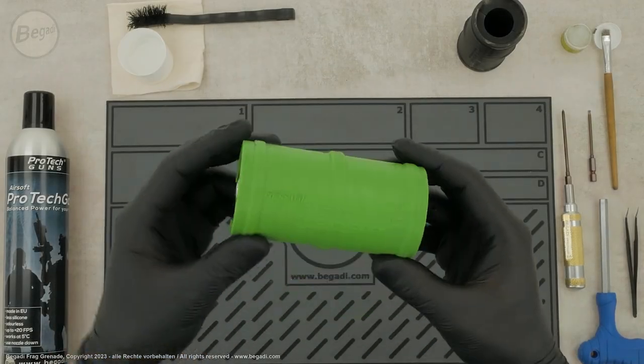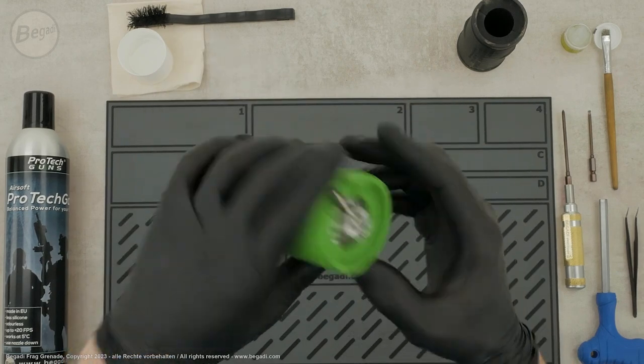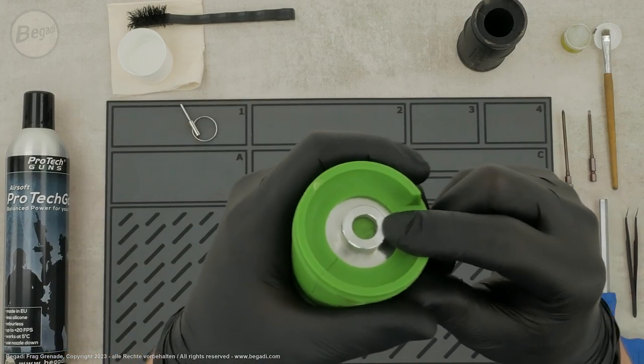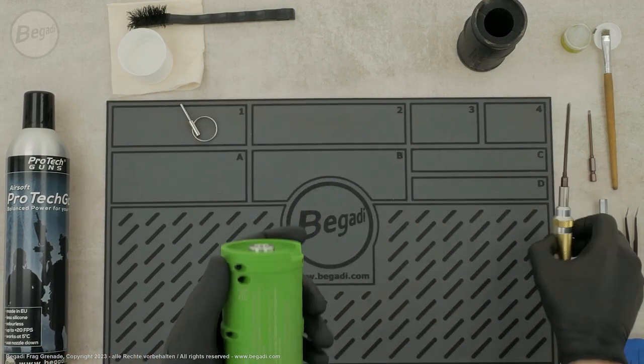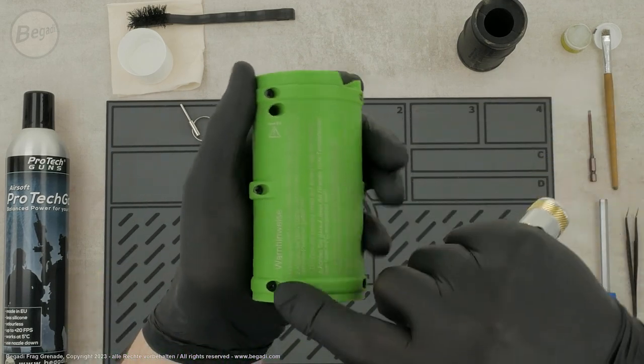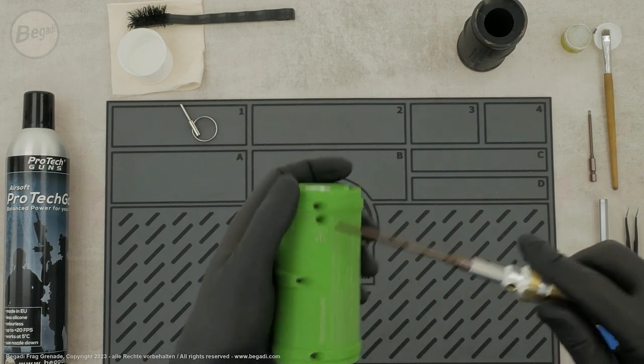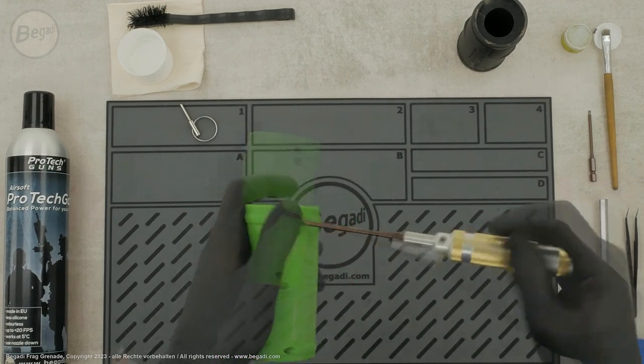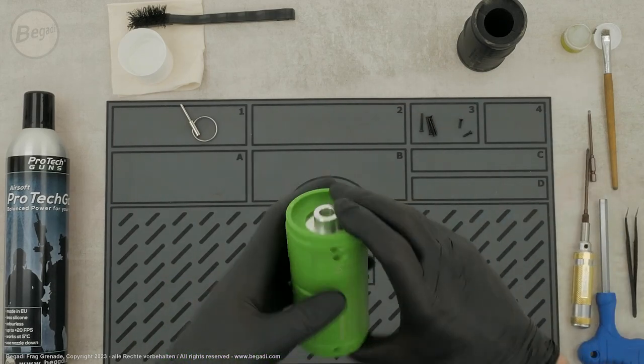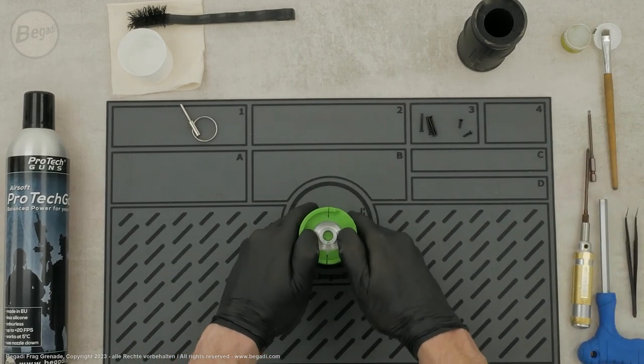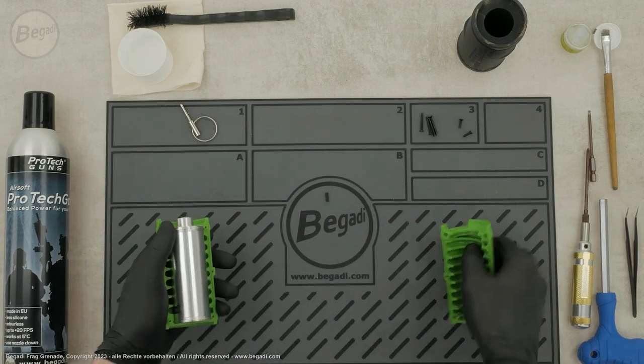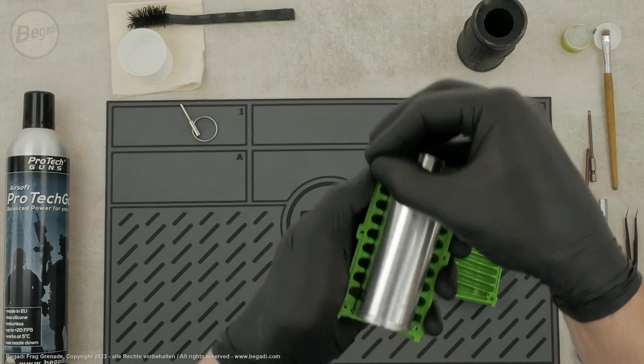To perform maintenance and cleaning, we need to disassemble the grenade. Before you begin, make sure the grenade is not pressurized. Once you have pulled the safety pin, the triggering mechanism should remain down. Now, loosen the 6 screws that connect the shell segments. After removing the screws, you can pull apart the 2 shell segments. This may require some force. Between the 2 shell segments, you'll find the rubber tensioner that holds the BBs inside. Be sure not to lose it.